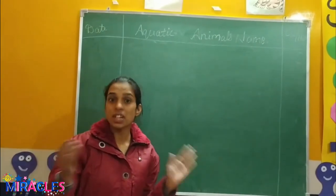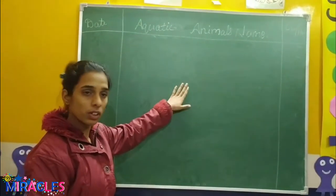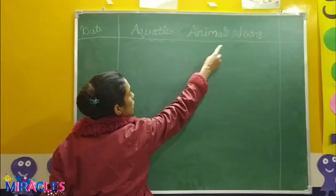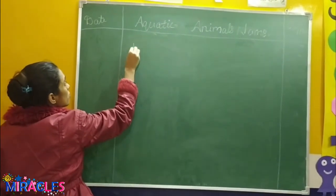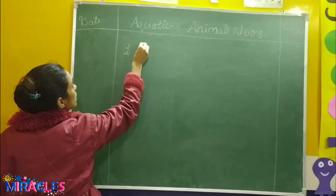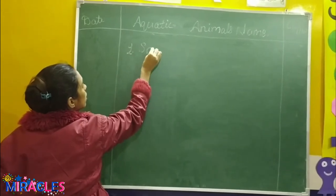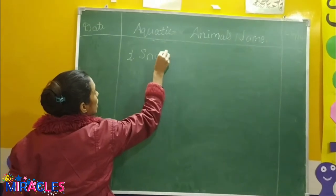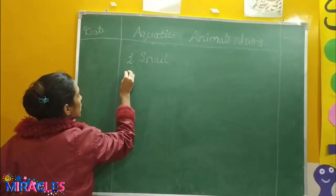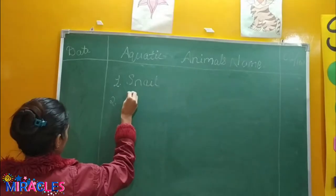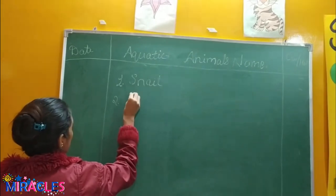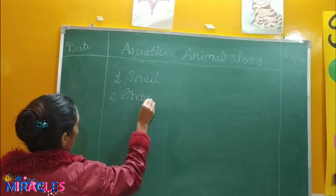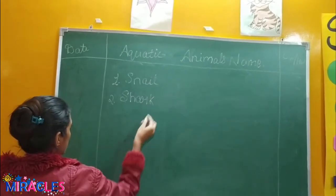So let's start our blackboard work, okay. First of all you have aquatic animal snail. Number one is snail — S-N-A-I-R-L, snail. Second, next is shark — S-H-A-R-K, shark.